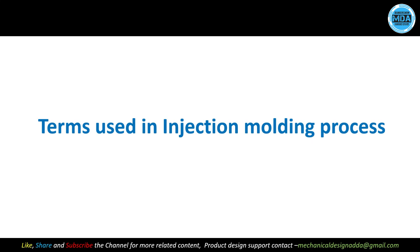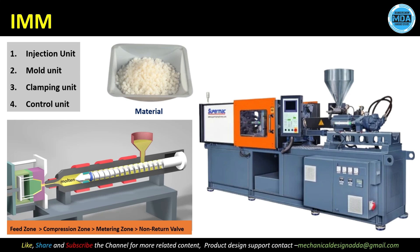Hello friend, in this video we will discuss the important terms used in the injection molding process. Here you can see the injection molding machine, generally referred to as IMM — injection molding machine. This machine has four units: injection unit, mold unit, clamping unit, and the control unit.